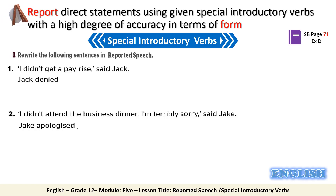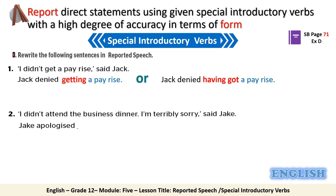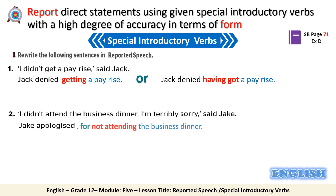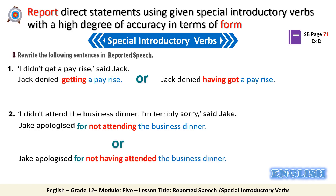How should we report the first sentence? We can write: 'Jack denied getting a pay rise,' or 'Jack denied having got the pay rise.' For sentence two: 'Jake apologized for not attending the business dinner,' or 'Jake apologized for not having attended the business dinner.'